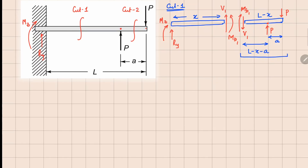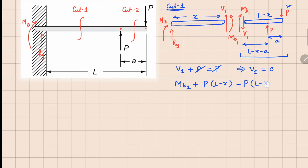Let's analyze the right part here. We notice that V1 acting down plus P acting down balances P here, so this gives us V1 equals zero. Similarly, taking moment M_b1 about this point, plus P times (L minus x) will balance the other term, which is anti-clockwise. So P times (L minus x minus a) equals zero. The PL cancels, the Px terms cancel, and overall M_b1 equals minus P times a.